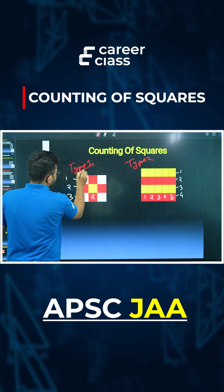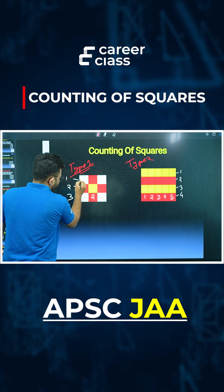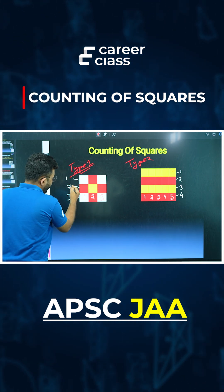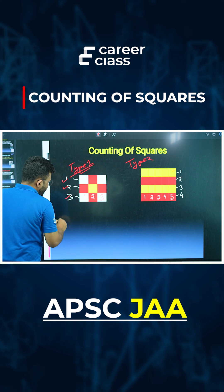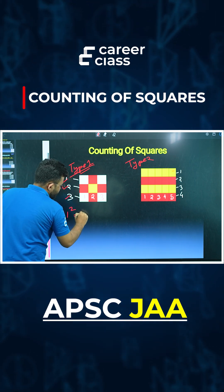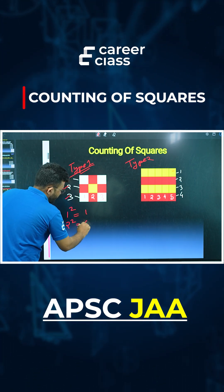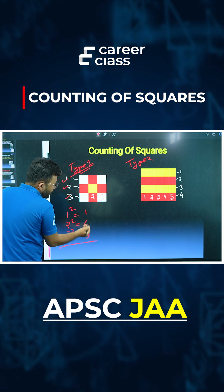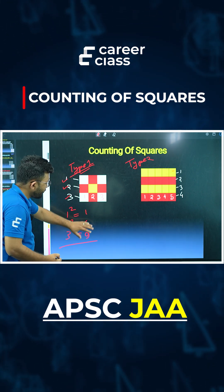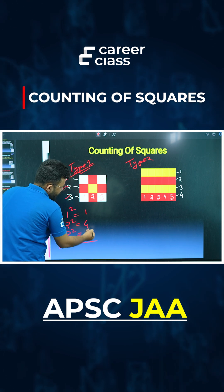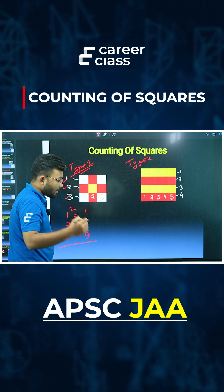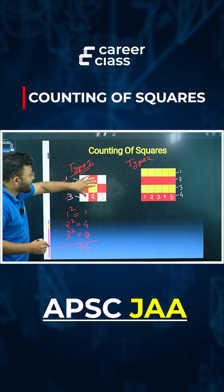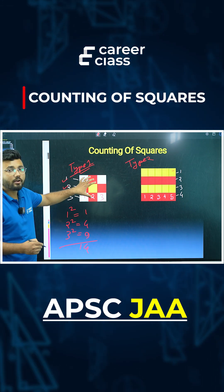For the first type, where the number of columns and rows are equal: if the number of columns is 1, 2, and 3, then the number of squares are 1 squared equals 1, 2 squared equals 4, and 3 squared equals 9. To get the total number of squares, we add them: 9 plus 4 plus 1 equals 14.